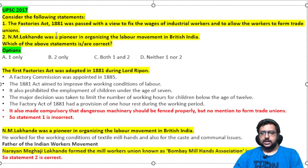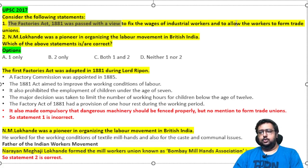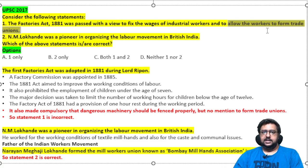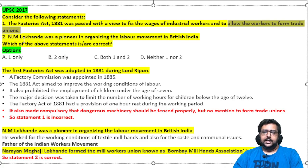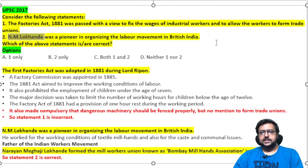Thinking common-sensically, Statement 1 is wrong — the British would not allow workers to form trade unions or anything that could later become a threat to them, especially in 1881. Narayan Meghaji Lokhande was actually the pioneer of organizing the labor movement and established many things, so Statement 2 is correct.